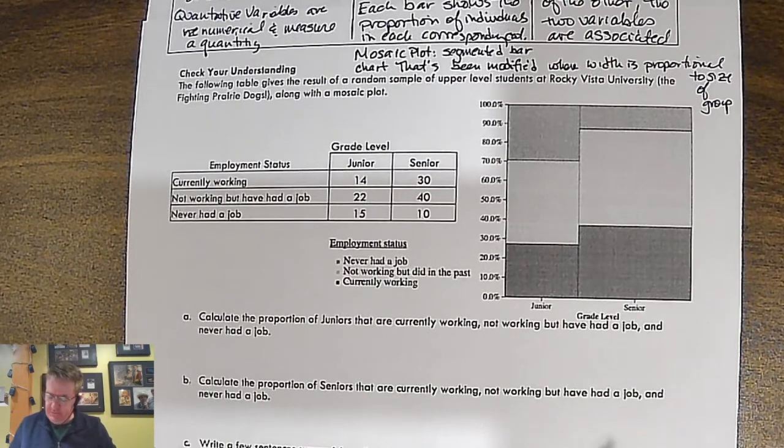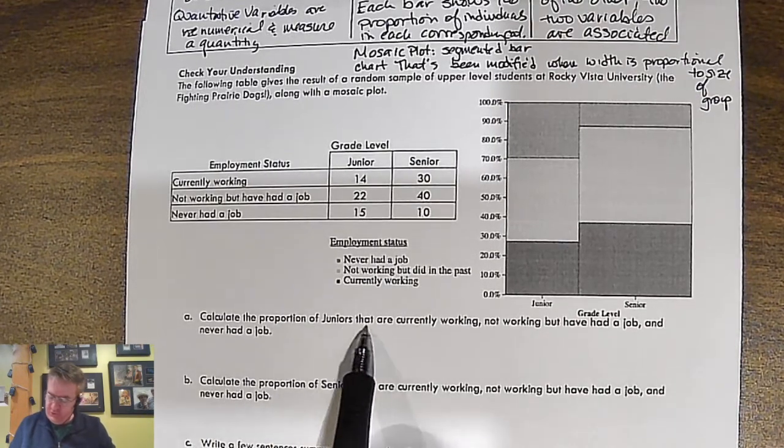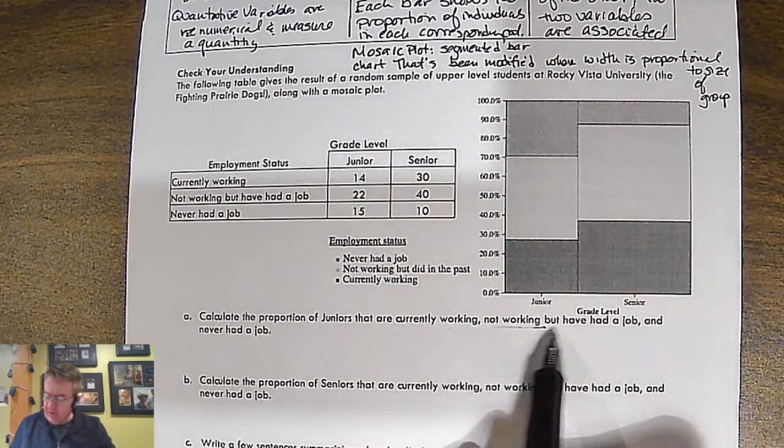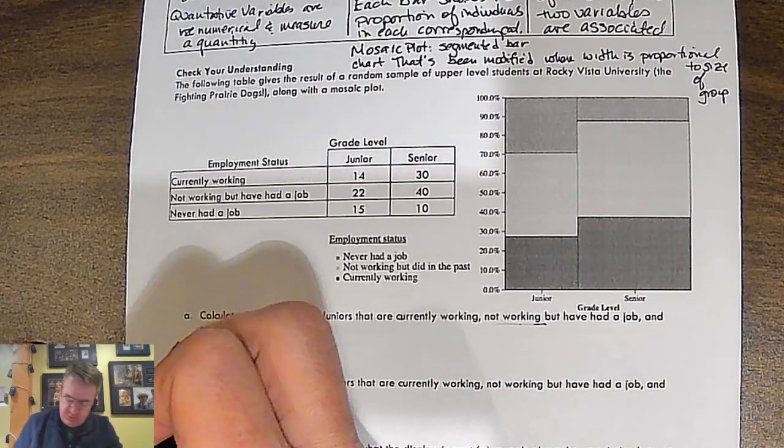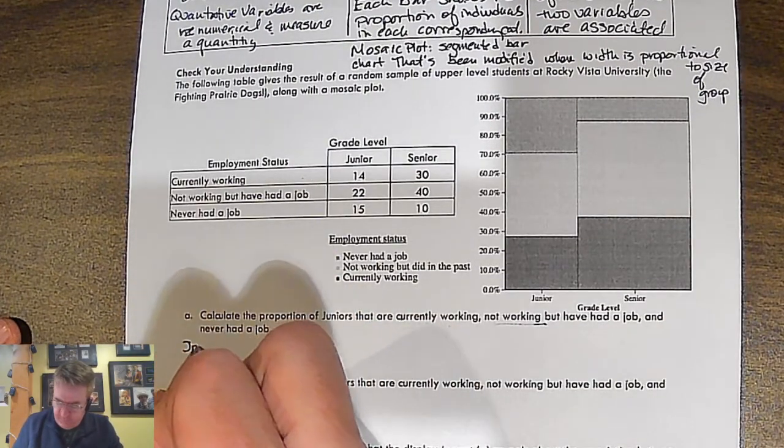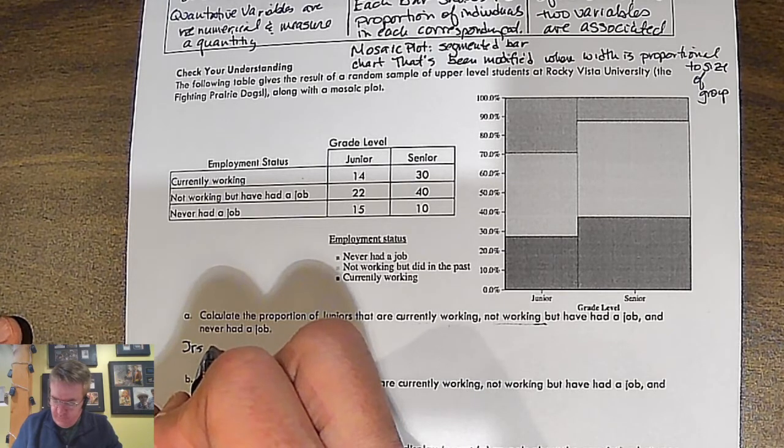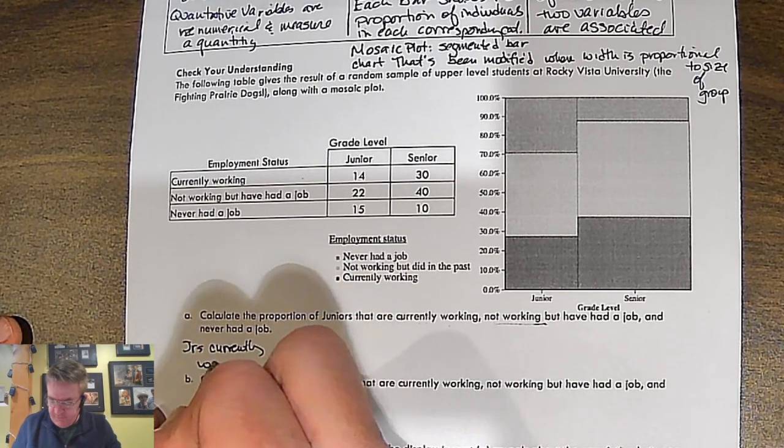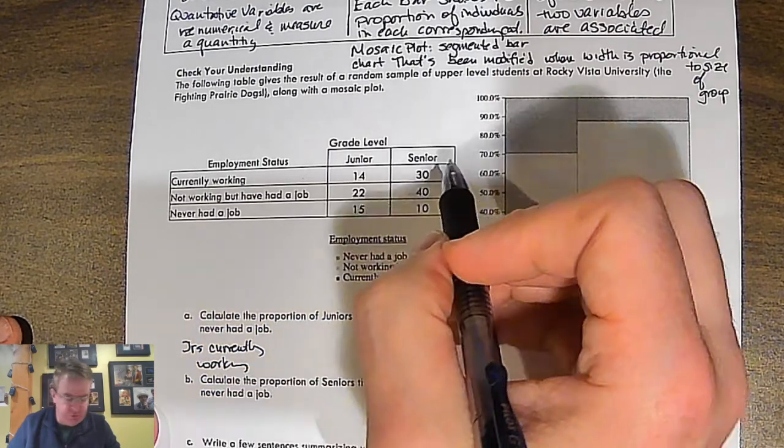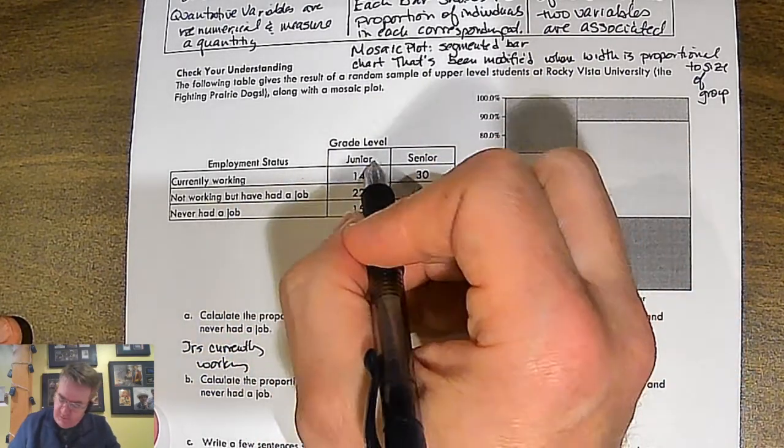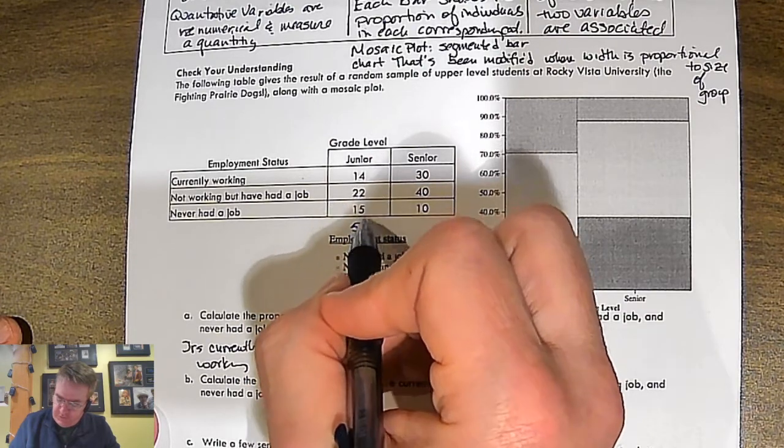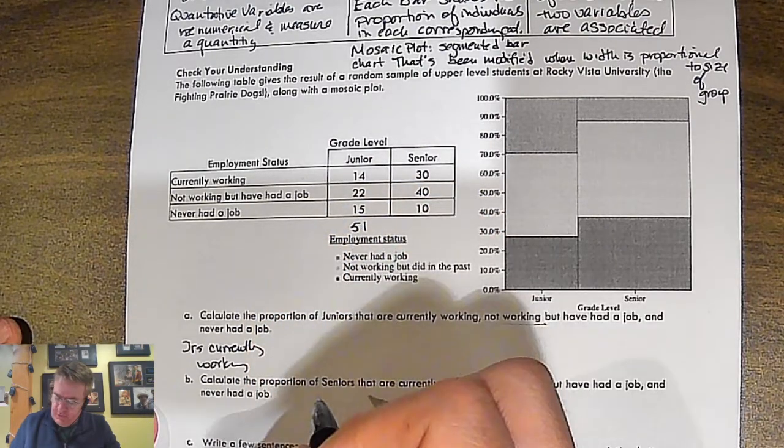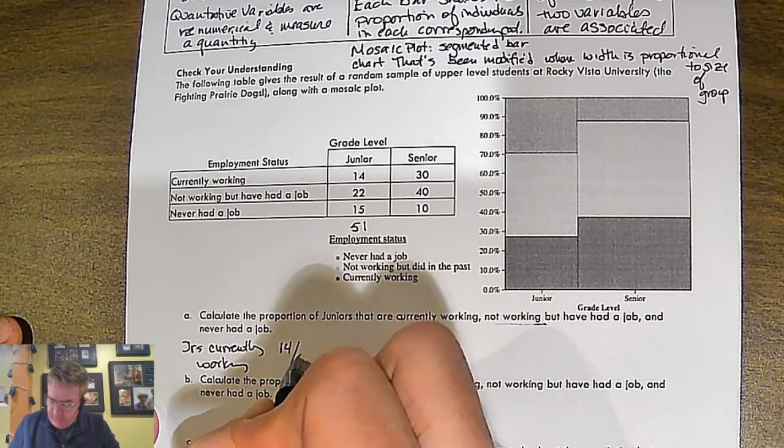So, with that being said, calculate the proportion of juniors that are currently working, not working, have had a job, etc. Okay, so juniors currently working. So, how many juniors do we have? We have a total of 51. So, currently, I've got 14 out of 51.